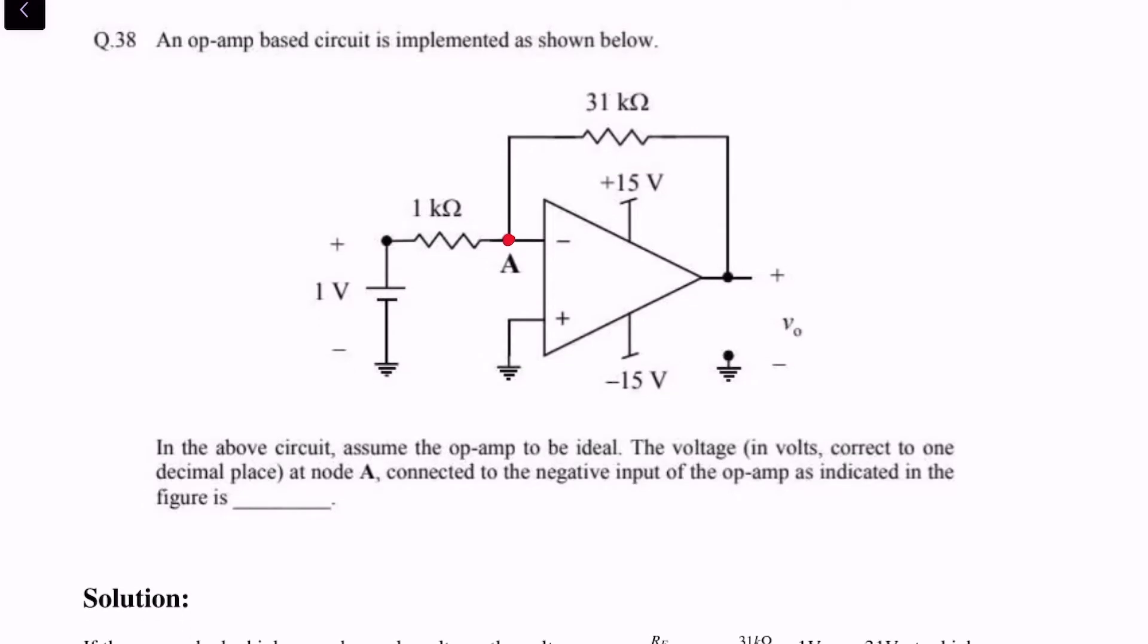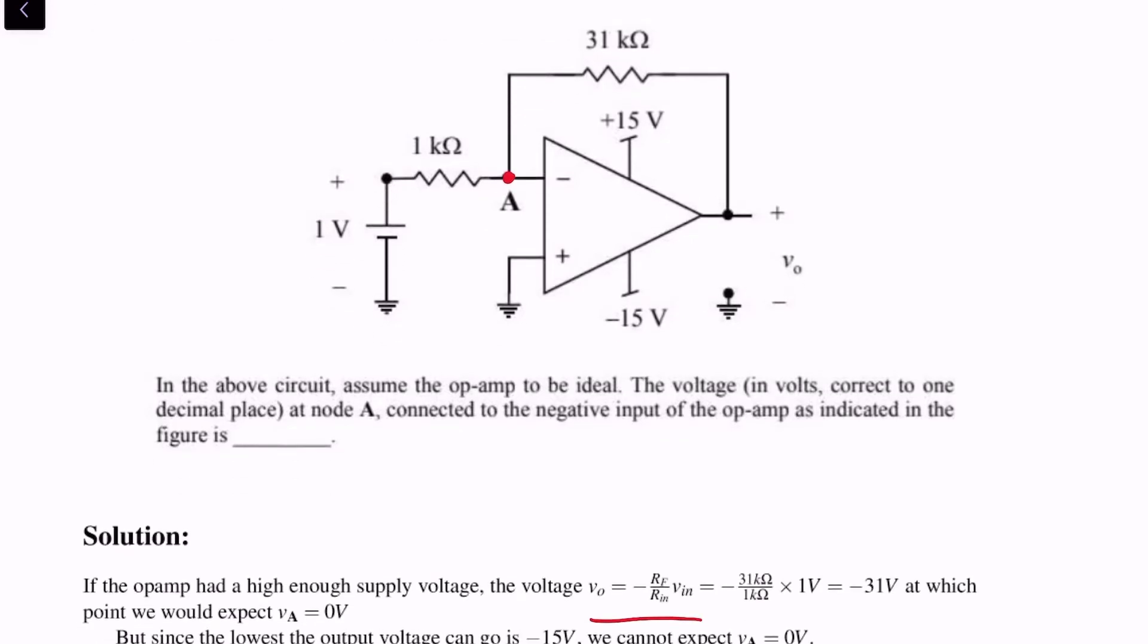So the idea is that by making Vout as minus Rf by Rn times Vn, we would get that Va is equal to 0. But if we do that, we would find that Vout is minus 31 volts.